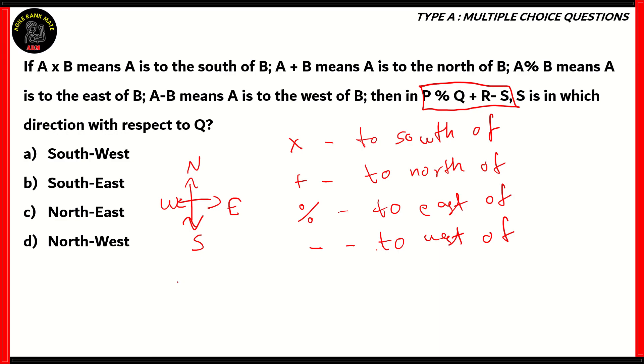Now we have Q plus R, which says Q is to the north of R. Now that means R comes to the south of Q. Next we have R minus S, which means R is to the west of S. So S lies here. So this is how the layout of the four letters looks like.